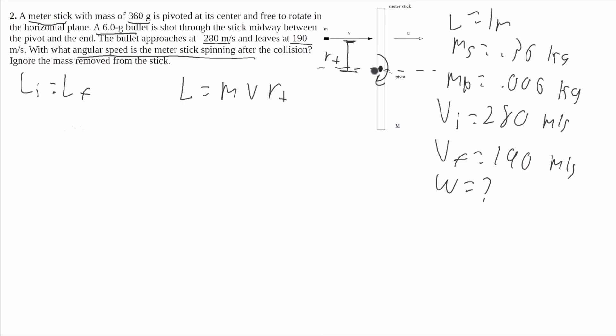So r perpendicular will be the same before the collision and after the collision. Now, r perpendicular is l over 4, because it tells us that it's pivoted by the center, and it tells us that the bullet will strike in between the top of the meter stick and the pivoted point. So it's going to be l over 4 from this pivot. So this mass is going to be the mass of the bullet, and I'm going to say that this is the initial angular momentum. Since we also said that the stick doesn't have any angular momentum, we don't have to worry about adding an extra term to this one.